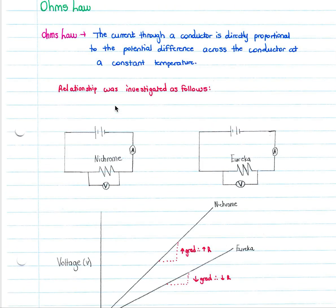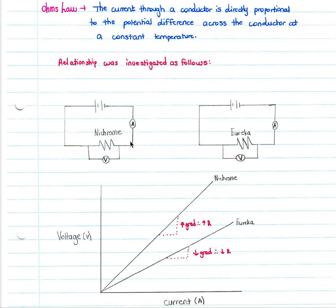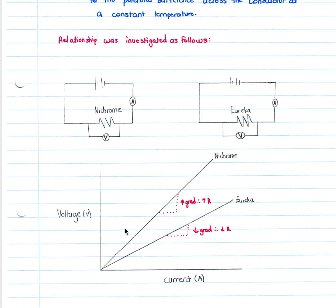The relationship for Ohm's law was investigated using nichrome and Eureka wire, measuring the voltage and the current. Nichrome has a far greater gradient on the V-I graph. Since R equals V over I, the gradient represents resistance — the increased gradient of nichrome shows it has a greater resistance, and the decreased gradient of Eureka shows it has a lower resistance.